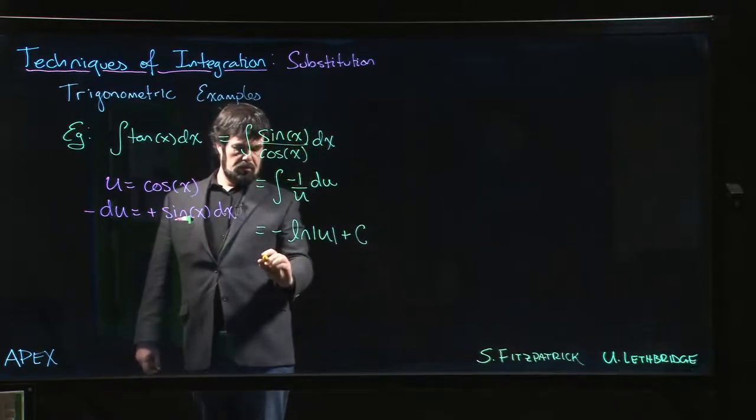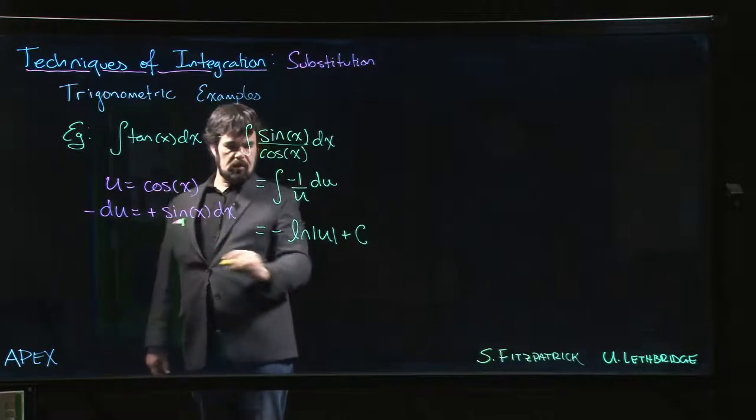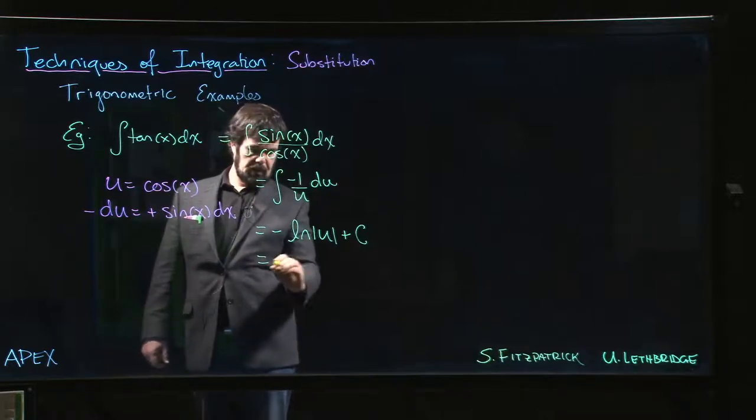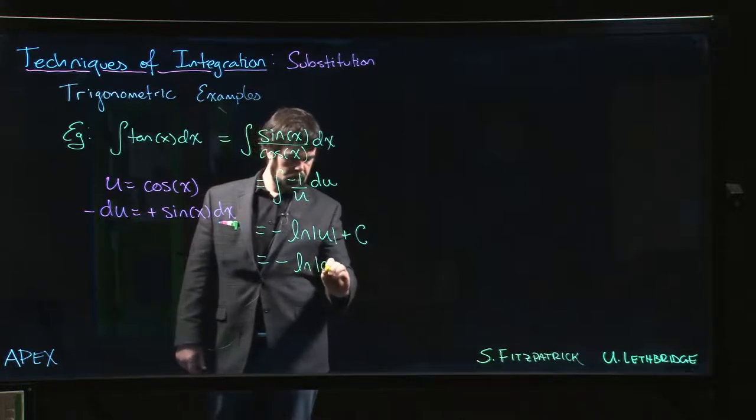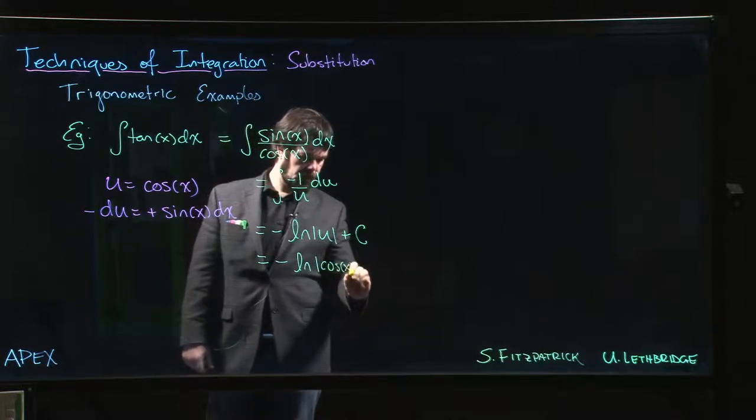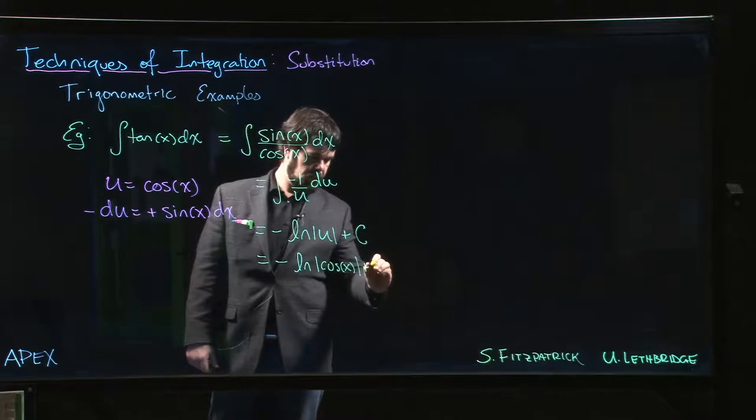And we can now put back that u is equal to cos x. So this becomes minus the natural log of the absolute value of cos x plus c.